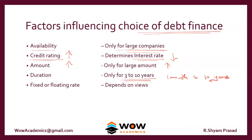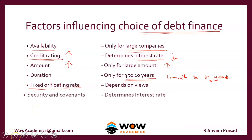Fixed or Floating Rate — which rate also determines the Debt Financing choice. Security and Covenants — security refers to the collateral, pledge, or asset you give as collateral. Covenants refers to the rules and regulations that Debt holders impose on the company. The higher the security, the lower the interest rate, and the higher the covenants, the lower the interest rate.